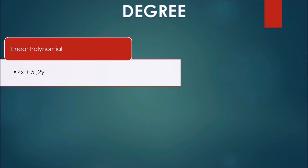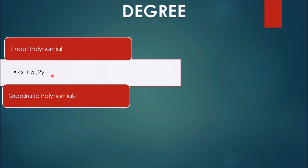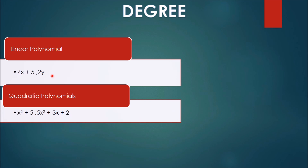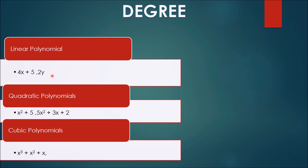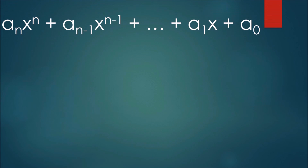Based on the degree of the polynomial we classify it further. Polynomials of degree 1 are called linear polynomials. Polynomials of degree 2 are called quadratic polynomials — examples are x squared plus 5 and 5x squared plus 3x plus 2. Polynomials of degree 3 are called cubic polynomials — example: x cubed plus x squared plus 3. In general, a polynomial in one variable of degree n has n plus 1 terms, where aₙ is the coefficient of xⁿ, aₙ₋₁ is the coefficient of xⁿ⁻¹, and so on.